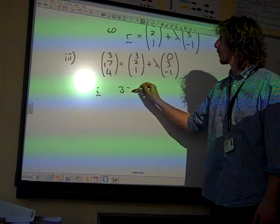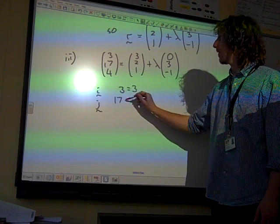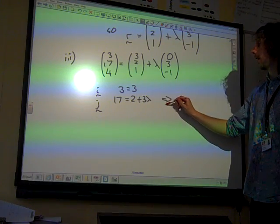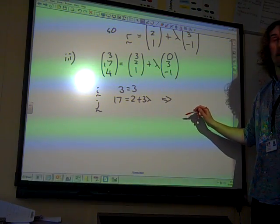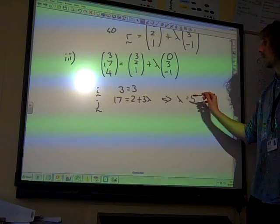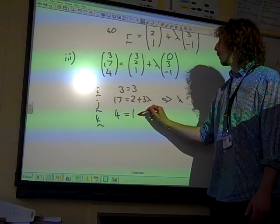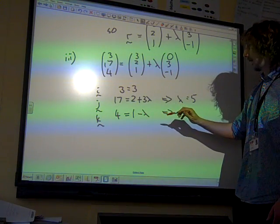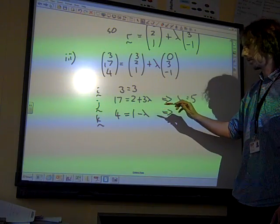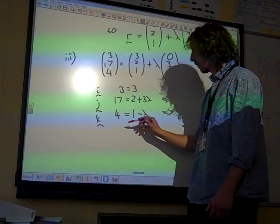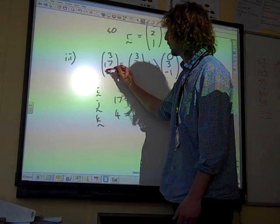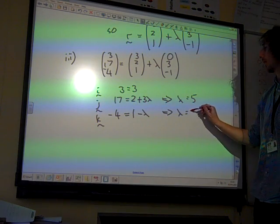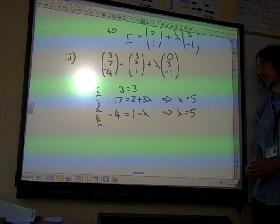If we look at the I component, 3 equals 3, well, that's fine. The J component, 17, is 2 plus 3 lambda. That gives us, 3 lambda is 15, so lambda is 5. And look at the K component, 4 is 1 minus lambda. And that also gives us that lambda is, have I written that wrong? It's a minus 4. Sorry, I've written down the coordinates wrong. That's a minus 4. There we go. That also gives us lambda equals 5, which shows that that point is on the line.